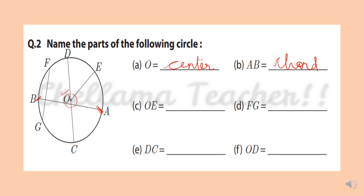OE is the radius. And FG is a line segment connecting two points on the boundary of the circle, so it is called a chord.